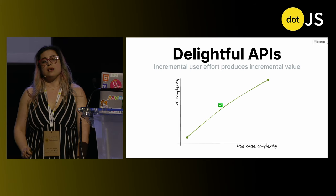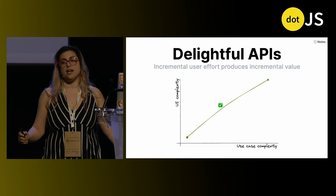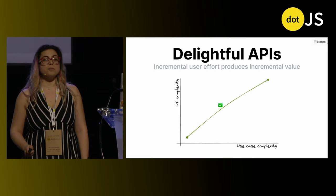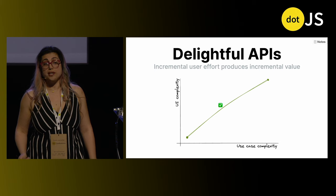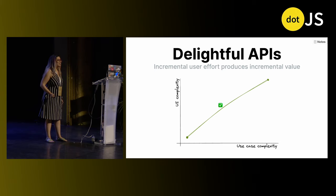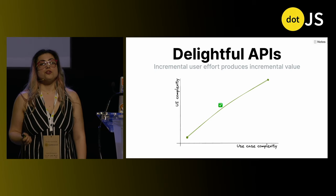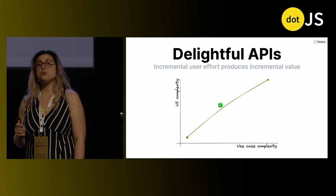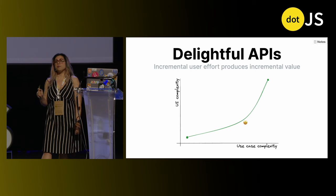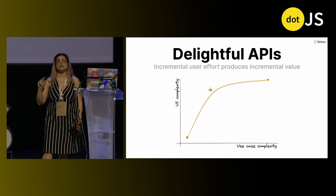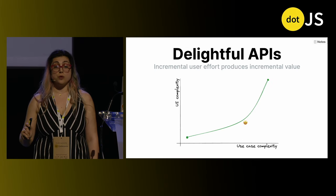I used to think Alan Kay's maxim was the be-all and end-all of API design. I don't anymore. Making simple things easy and complex things possible is a good first step — and yes, it's surprising how many APIs have failed it — but these are just the two ends of the spectrum. For truly delightful APIs, all the points in between matter as well. You want to aim for a smooth curve where UI complexity increases gradually and slowly with use case complexity. The more gradual, the better.